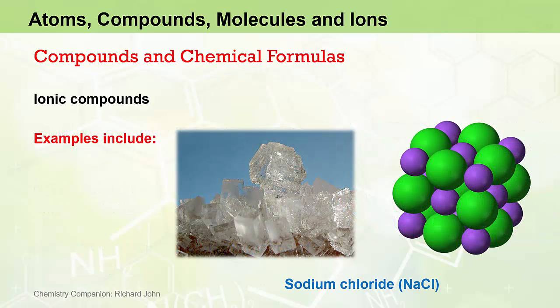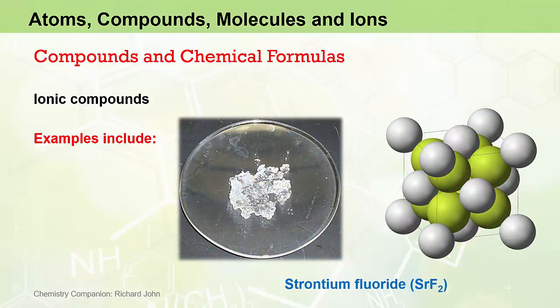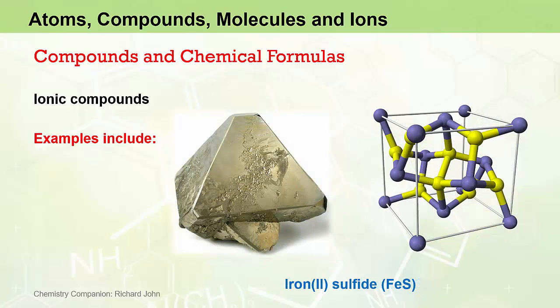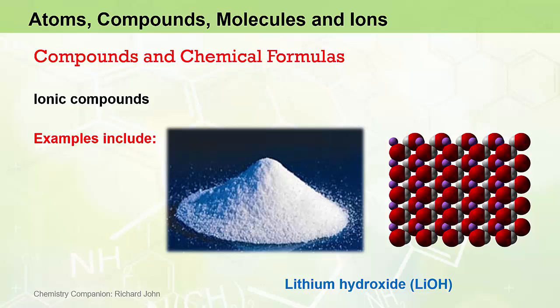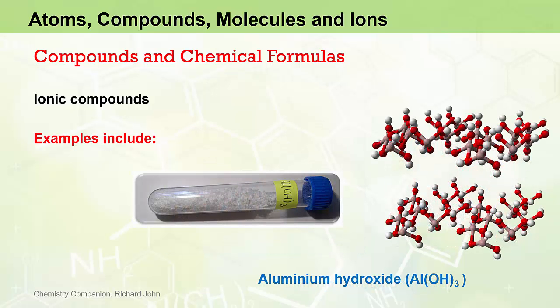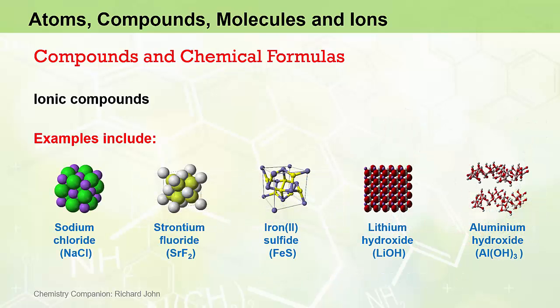Examples of ionic compounds include sodium chloride NaCl, otherwise known as common table salt, strontium fluoride SrF2, iron(II) sulfide FeS, lithium hydroxide LiOH, and aluminum hydroxide Al(OH)3. Just reiterating, all of these ionic compounds are comprised of metals bound to non-metals or metals bound to groups of non-metals.